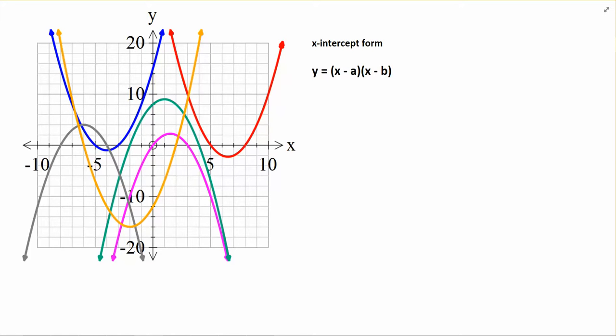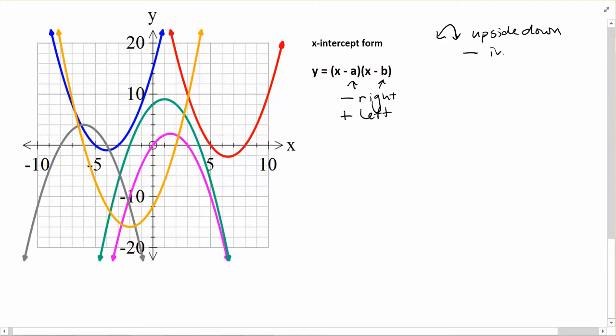So a few more examples, and in this case we're going to use the x-intercept form to write the equation. Reminders for us: if we have a negative, it's going to go to the right for the x-intercept, and if we have a positive, it will be to the left. And that's for both the numbers in the brackets. And again, if you have an upside-down one, you put a negative in front of the equation. So we'll take a look at that.